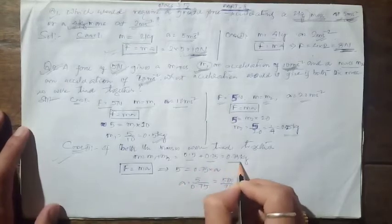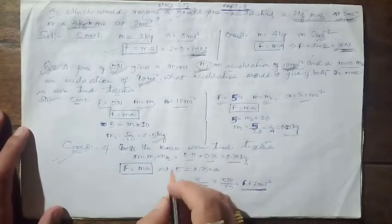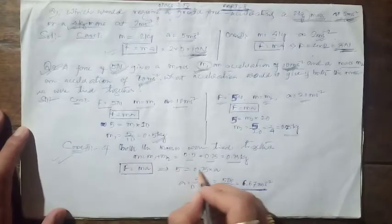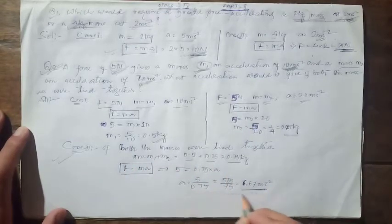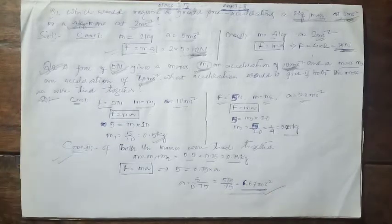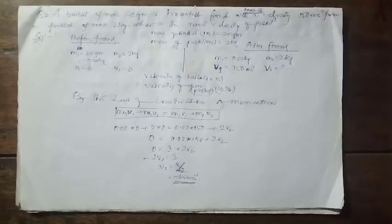The combined mass is 0.5 + 0.25 = 0.75 kg. Applying 5 newton to this combined mass and simplifying, we get the acceleration as 6.67 m/s².